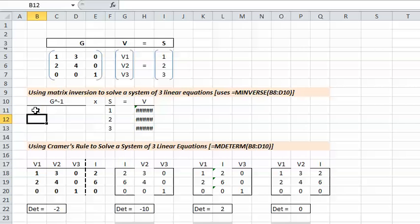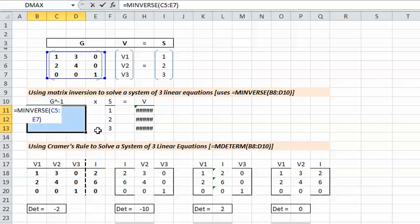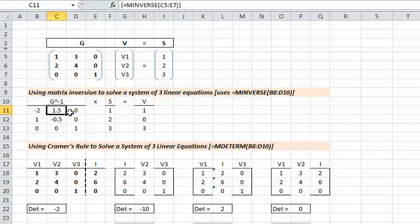Now you specify an array - you're going to grab the 3x3 array corresponding to G, close the parentheses, hit enter. What you're going to do is select the full 3x3 cell array for G inverse, and then press F2 to go into the edit mode. With the cursor blinking in that cell, you now press Ctrl-Shift-Enter.